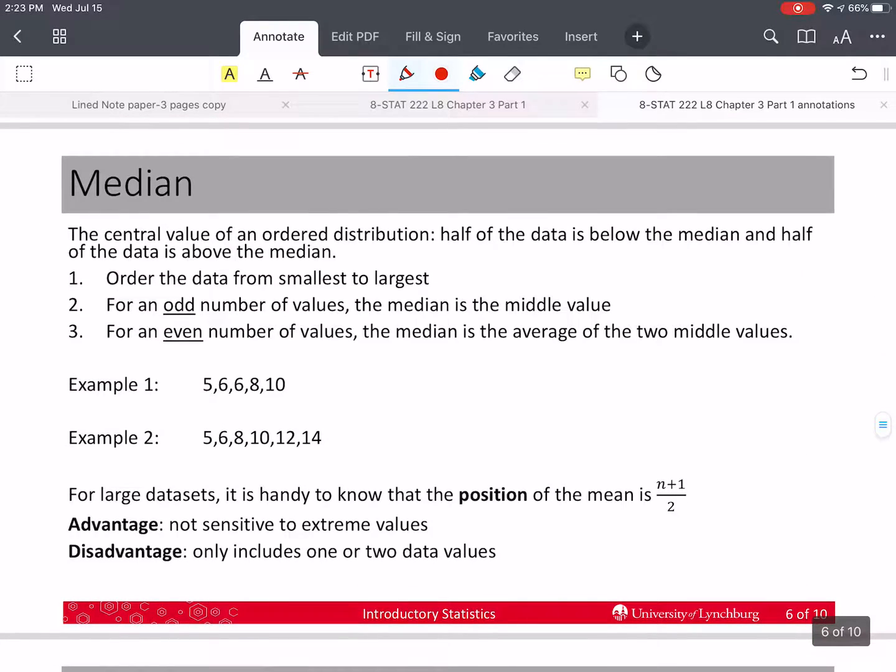Now, let's talk about the median. If we put the data in order, then we can find the median. Half of the data is below the median, half of the data is above the median if it's put in order. The procedure here is that we order the data from smallest to largest. If it's an odd number of values, the median is going to be in the middle. If it's an even number of values, the median is the average of the two middle values. Let's look at an example here. Here we have five data points. I can mark off a value from both the top and the bottom and I'm left with the median of six. So median for this example is six.